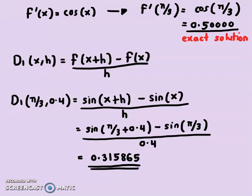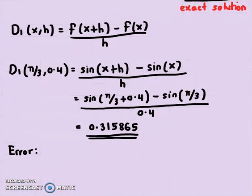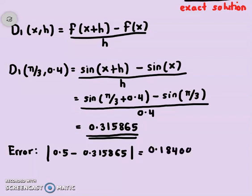So the exact solution is 0.5 and using D1 I got 0.315865. The numerical error — absolute value of exact minus approximation — is |0.5 − 0.315865| = 0.184 and something. That's quite a large error.